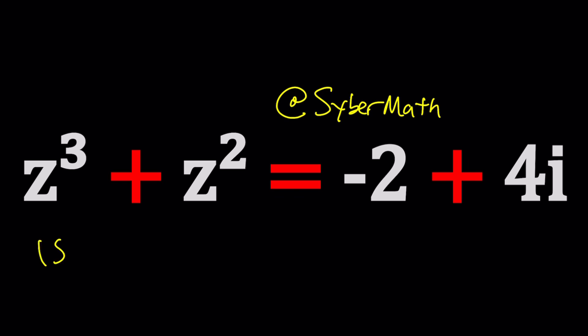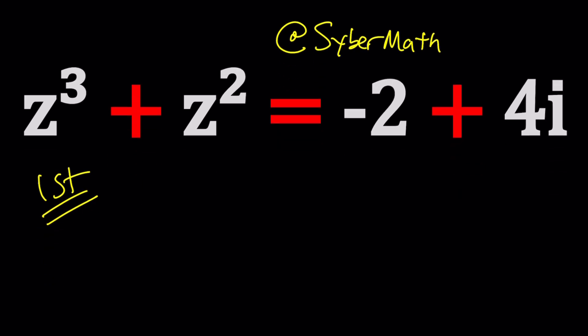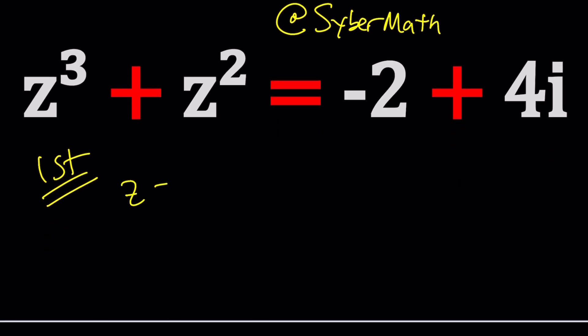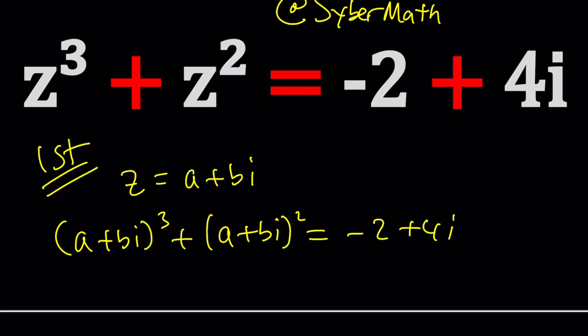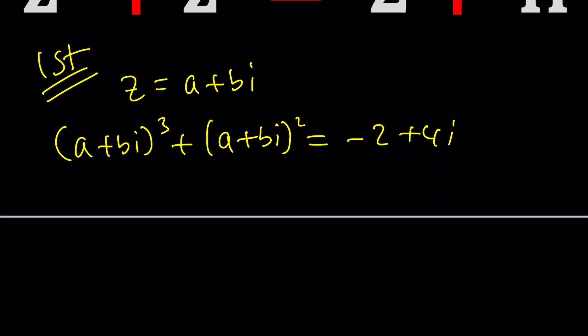First method. For my first method, I tried replacing z with a plus bi because why not? It's the name of this channel so we might as well use it. When I did, I ended up with something like this and then something like this. And when I expand it, I separated the real parts and imaginary parts and I ended up with a system of equations that kind of looks like this.